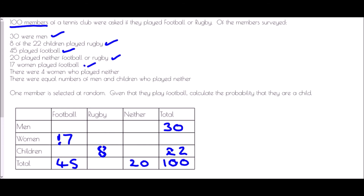There were 4 women who played neither. There were equal numbers of men and children who played neither. We know 20 people played neither, but 4 of those were women, so 20 take away 4 is 16. Those 16 are equally spread between men and children, so 16 divided by 2 is 8 — there were 8 men and 8 children who played neither.